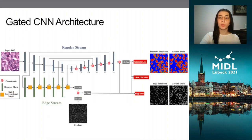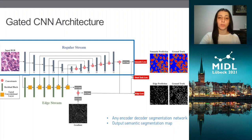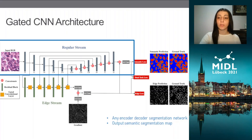We employ a two-stream gated CNN architecture to try to improve boundary segmentation. We can look at this in three parts. The first is the regular stream, which can be any encoder-decoder semantic segmentation network. In our case, we predict three classes: the nuclei, boundary, and background class.